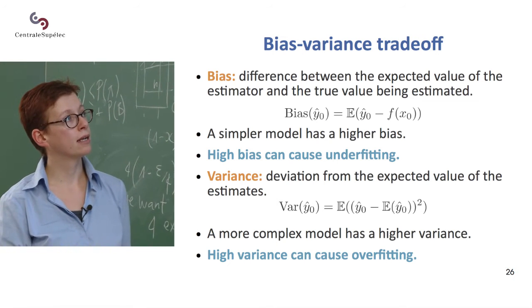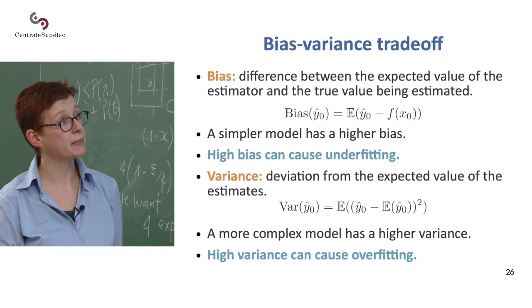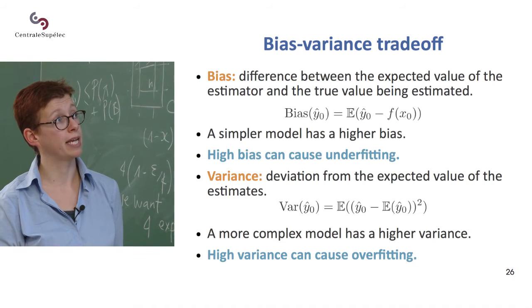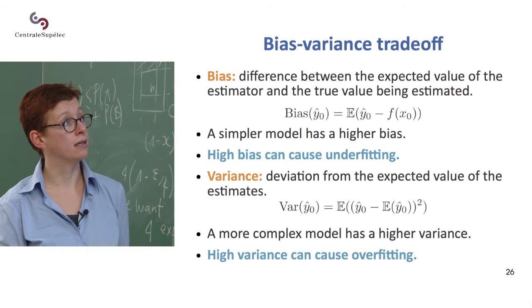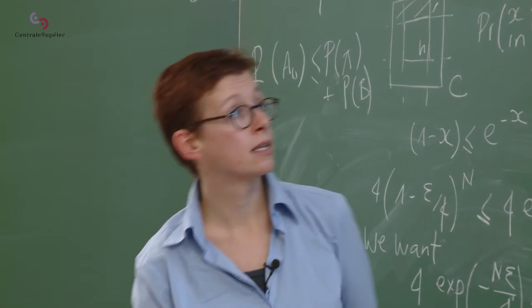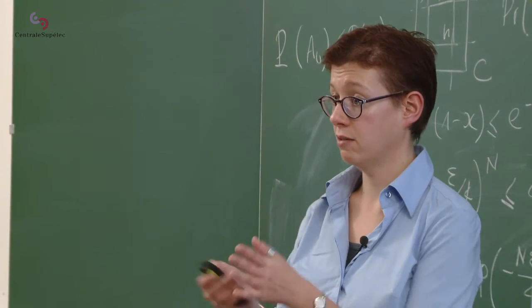So in other words, the bias of your estimator is this expected value of the difference between the estimator and the true value. So a simpler model will have higher biases because you'll be far from the mean.